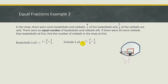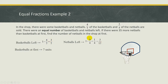Now we can apply the equal fraction concept. Since the question says there were equal number of basketballs and netballs left, I will need to make the numerator the same. So how do I make this numerator the same? I will need to multiply: 1 times 3 will give you 3, while 4 times 3 will give you 12. After making the numerator the same, we can now compare the denominator. The denominator for the basketball is 7 units, while the netballs will be 12 units.